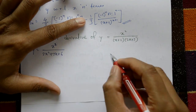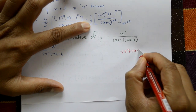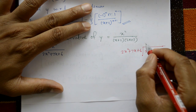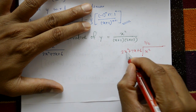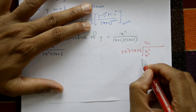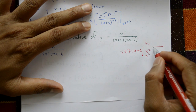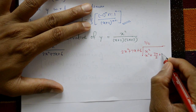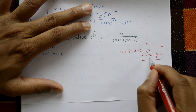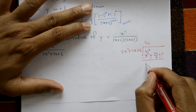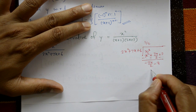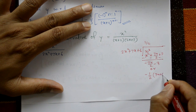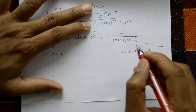Using the division method on x² divided by (2x²+7x+6): the quotient is 1/2. Multiply 2x²+7x+6 by 1/2: subtract to get remainder. The remainder is -(1/2)(7x+6), and the quotient is 1/2.